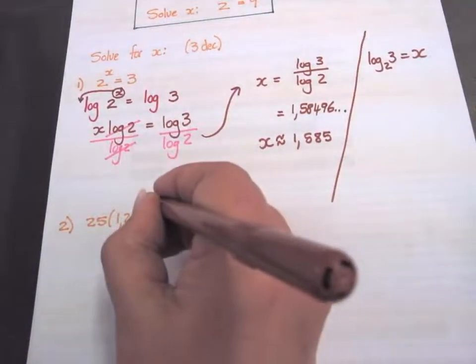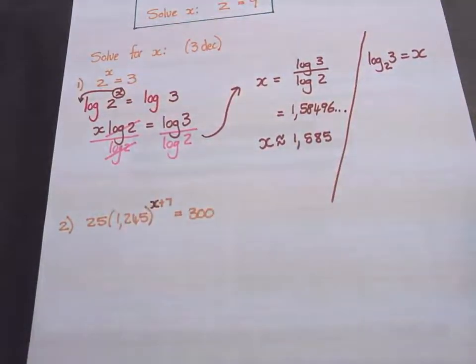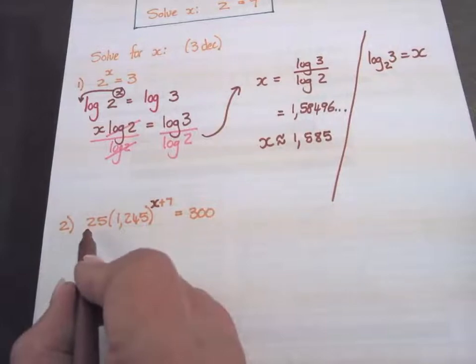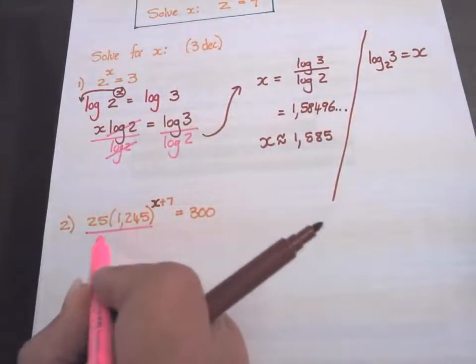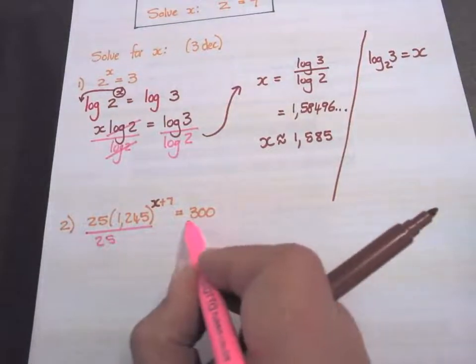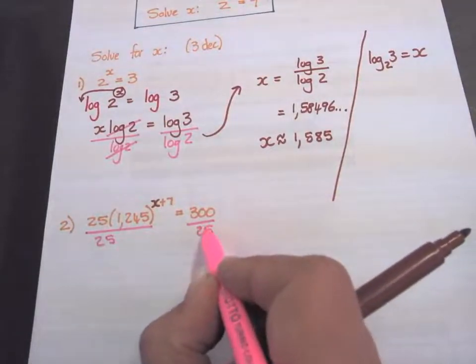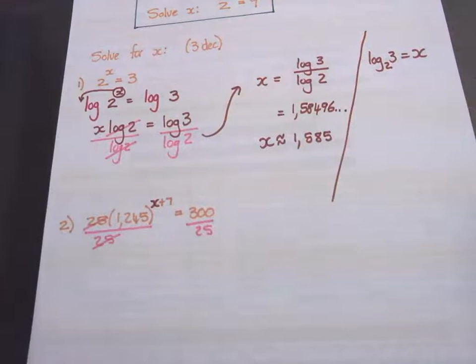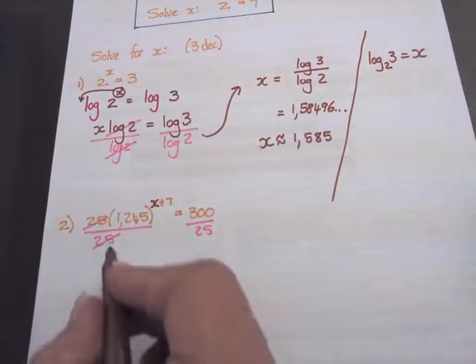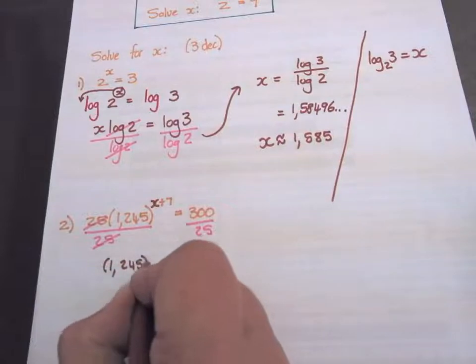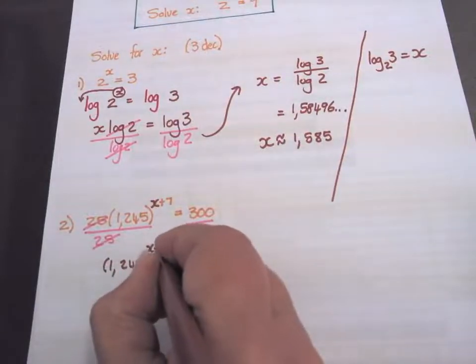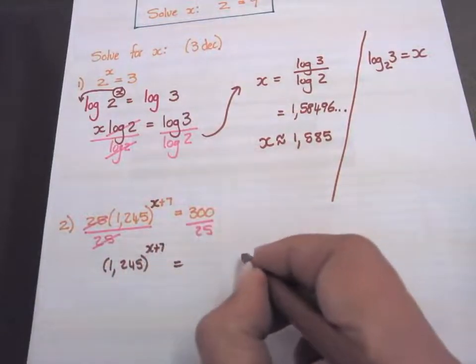My x in the second sum is in the exponent. So to get x alone, to solve for x, we must first get rid of this 25. Divide by 25, divide by 25. And then we have 1.245 to the power of x plus 7 equals 12.